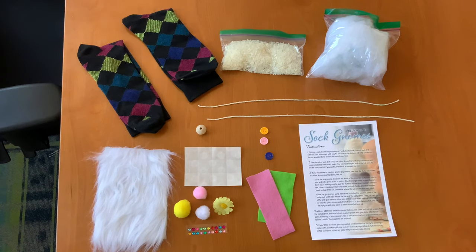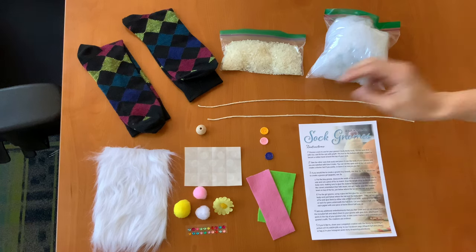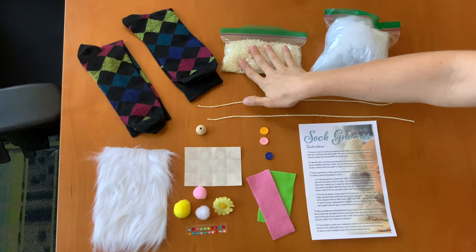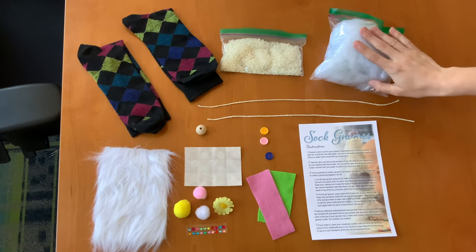Let's go ahead and first take a look at what is in each of our kits. In your Take and Make kit, you should have two socks, a bag of rice, a bag of polyfill.